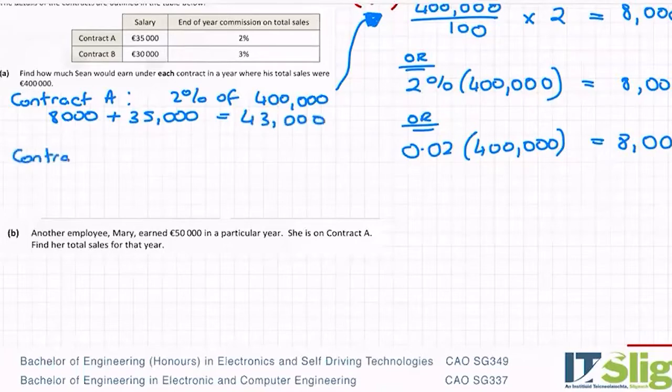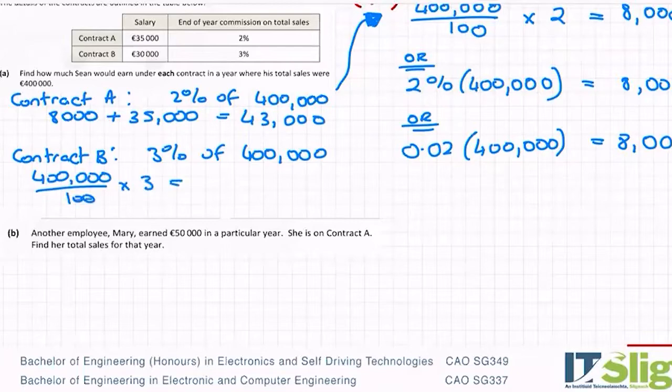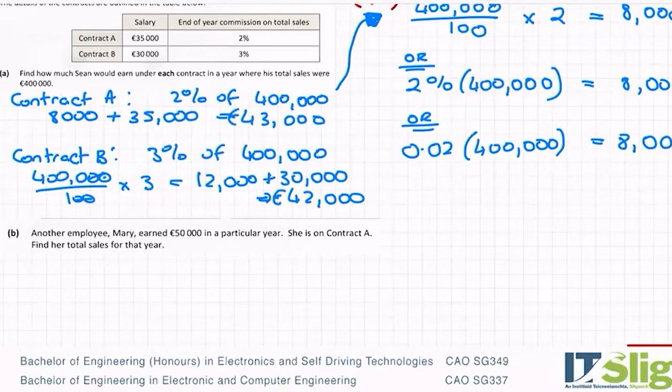For contract B then, you're getting 3% of 400,000, whichever way you want to do it. So I'm going to divide by 100 and multiply by 3. That's 12,000. And I add that one on to his salary, which is 30,000 and he gets 42,000 euros. So 43 if you're on contract A, 42 if you're on contract B.